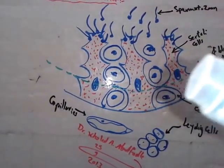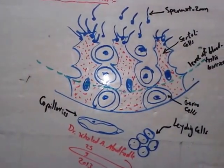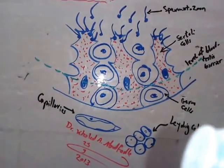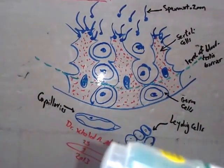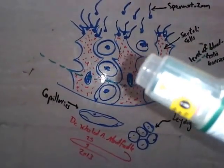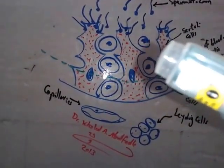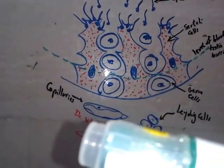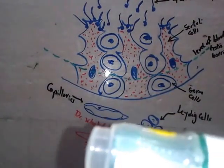What are the functions of the Blood Testis barrier? The Blood Testis barrier prevents certain substances from passing from capillaries into the interior of the seminiferous tubules, such as toxins, antibodies, and harmful drugs and substances.